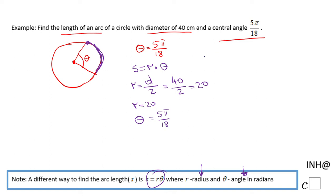We can go back to this formula and we're going to have s equals r, which is 20, times θ, which is 5π/18. You can multiply 20 times 5 here.